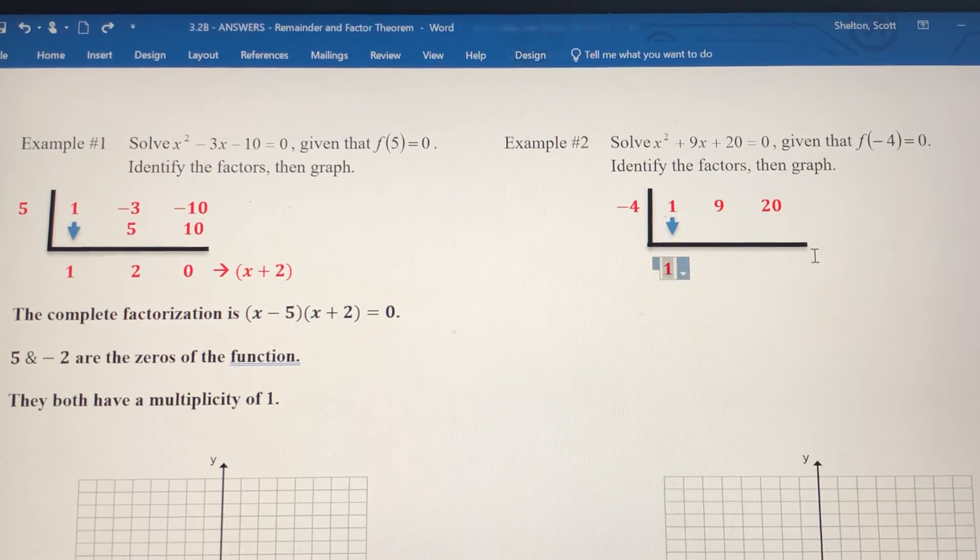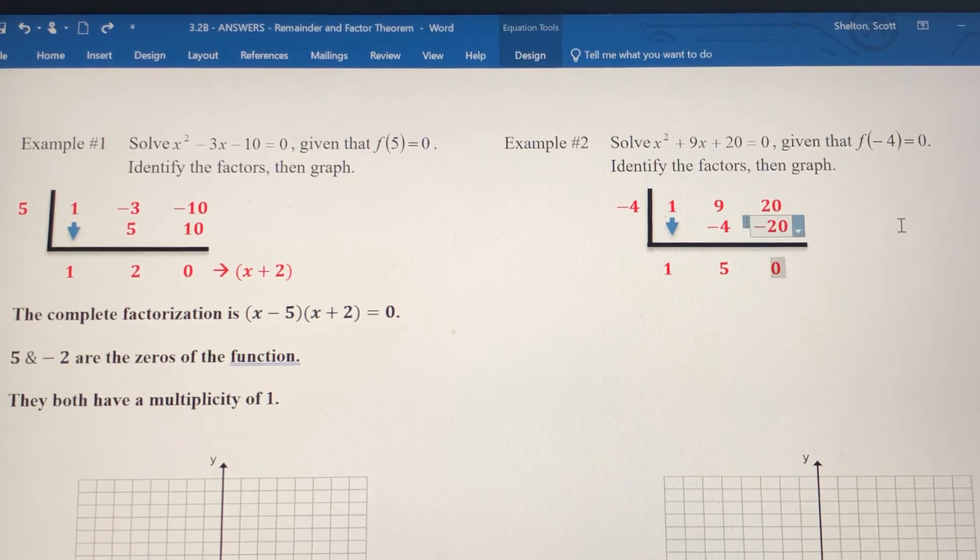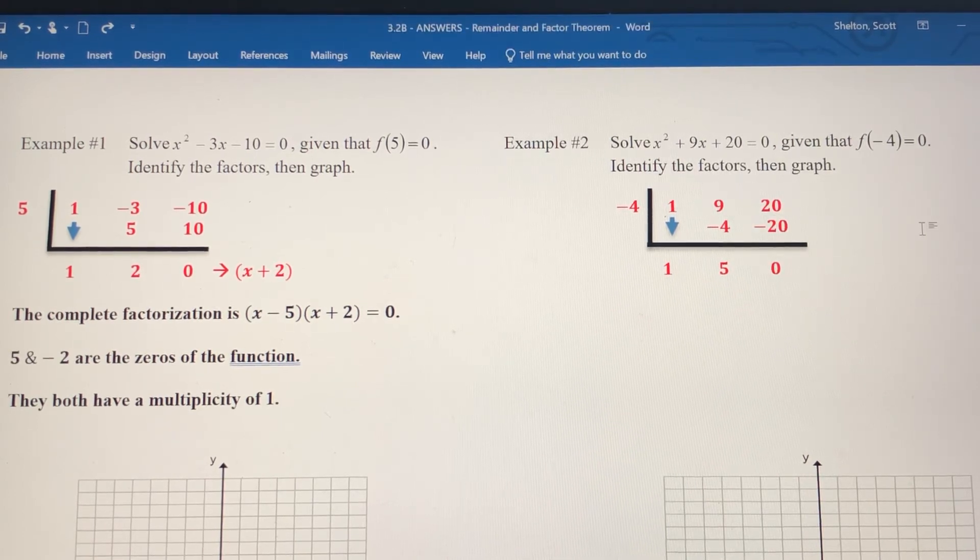So bring down the 1, multiply negative 4 times the 1, add the 9 and the negative 4, multiply the negative 4 times 5, and then add the 20 and the negative 20. So again, we get a remainder of 0, which we should have gotten.